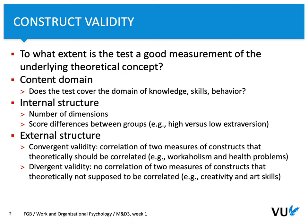External structure of a test is related to two aspects: convergent validity and divergent validity. When we test for convergent validity, we typically correlate two measures that are related to two different constructs. Based on theory, we can predict that those constructs, as measured using specific tests, should be correlated with each other. So, if you are interested in testing the validity of a workaholism measure, you would correlate it with a questionnaire that measures health problems.